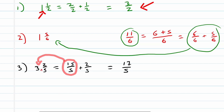For the last example, let's work from an improper fraction to a mixed number. Let's say 22 over 5. How can we split this in terms of our denominator? It doesn't help to just say 5 plus 17 — we need to work until the remaining numerator is smaller than 5. So we say 5 plus 5 plus 5 plus 5 plus 5, which is 4 times 5, equal to 20.